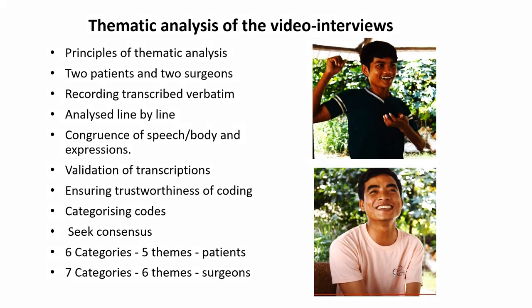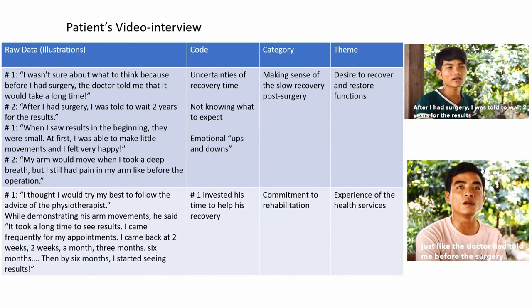To give you an example, from the patient's video interview you can see there are four columns. The first column is the raw data, also called the illustrations — these are the patient's transcribed responses. When you read through the transcriptions, you must actively observe for meanings and patterns that appear in your data set. You can jot them down or create memos to remind yourself of potential codes you'd like to create.